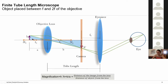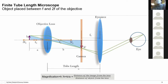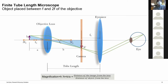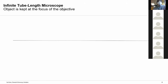In the finite tube length microscope, the distance between the objective and eyepiece is called the tube length. Once the magnification of the system is fixed, this tube length remains the same and cannot be changed. This created some complications in initial microscopy design, so modern microscopes do not use the finite tube length configuration. Modern microscopes use what is called an infinite tube length configuration.